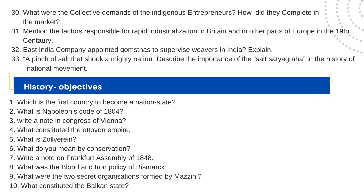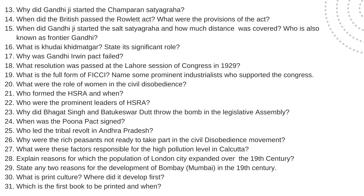What is Napoleon's Code of 1804? Write a note on the Congress of Vienna and what constituted the Habsburg Empire. What is Zollverein? What do you mean by conservatism? Write a note on the Frankfurt Assembly of 1848. What was the blood and iron policy of Bismarck? What were the two secret organizations formed by Mazzini? What constituted the Balkan states? Who started the freedom movement in Italy? How did Napoleon help in the spread of nationalism?